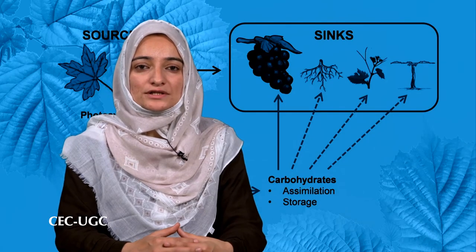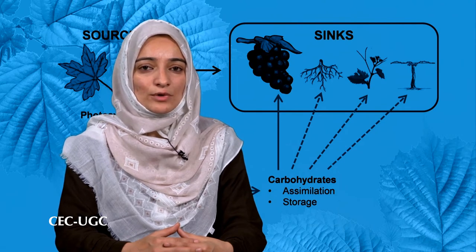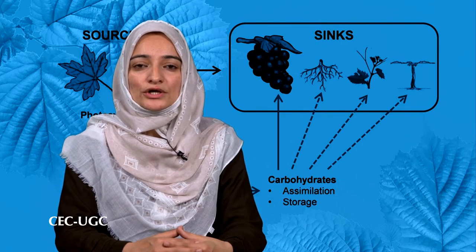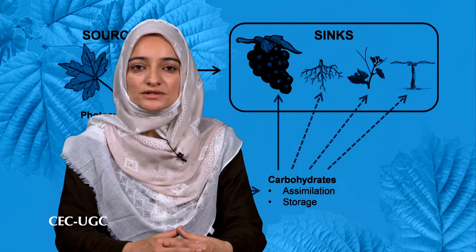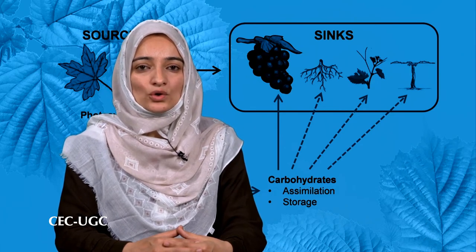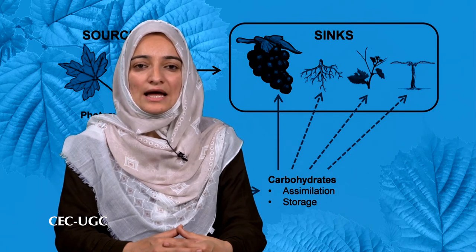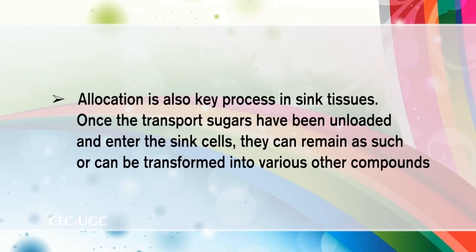The regulation of the diversion of fixed carbon into the various metabolic pathways is termed allocation. Allocation includes the storage, utilization, and transport of fixed carbon. The carbon fixed in a source cell can be used for synthesis of storage compounds, metabolic utilization to meet the energy needs of the cell, and synthesis of transport compounds. Allocation is also a key process in sink tissues, where unloaded transport sugars can remain as such or be transformed into various other compounds.